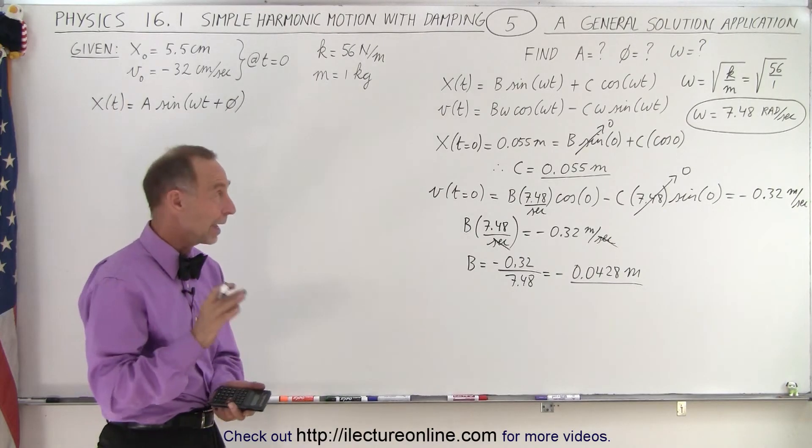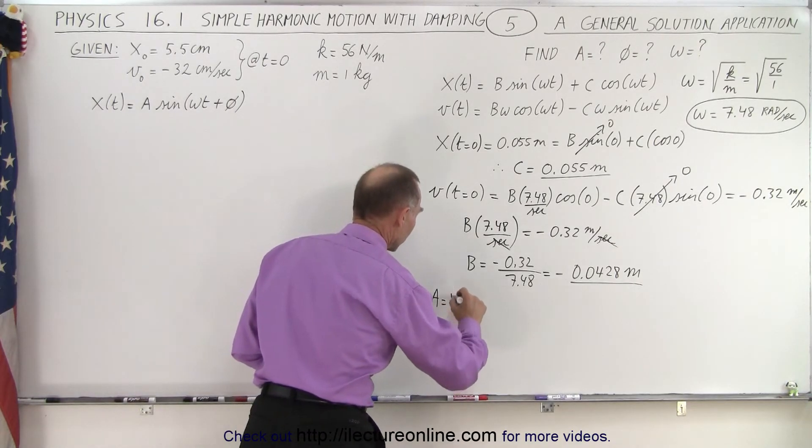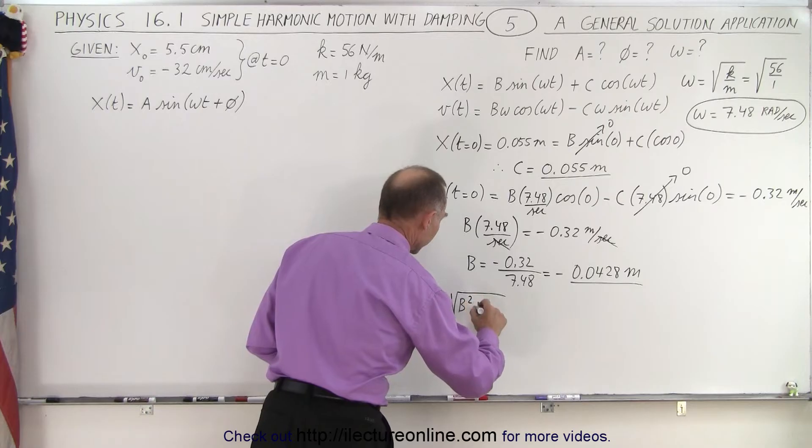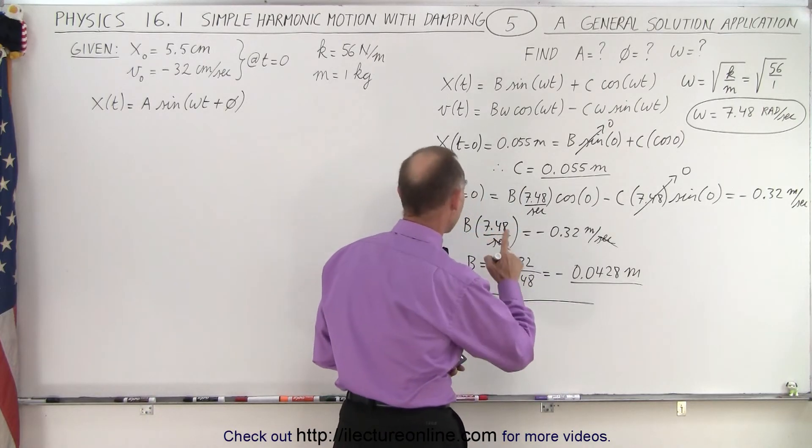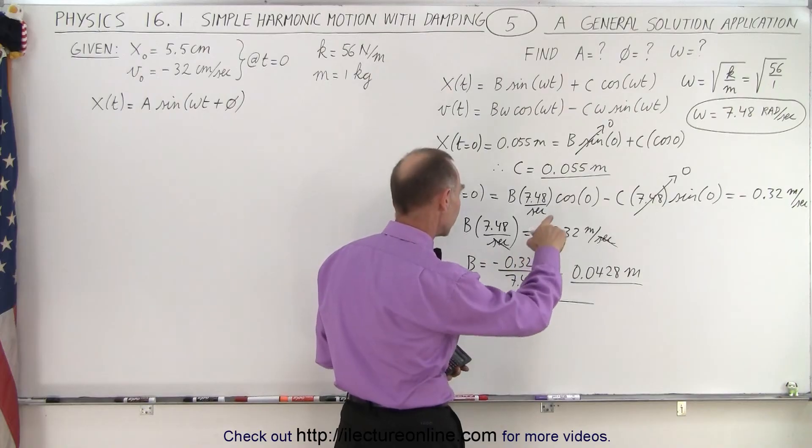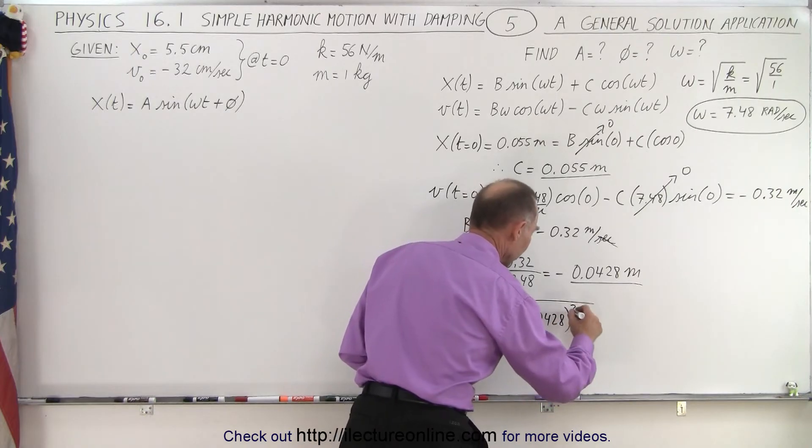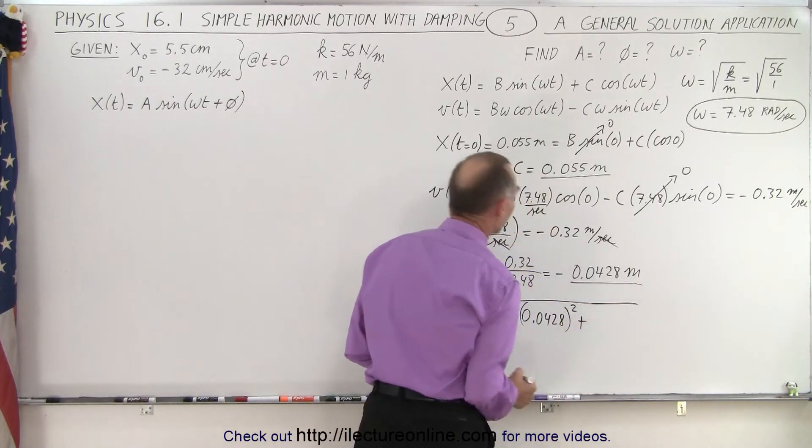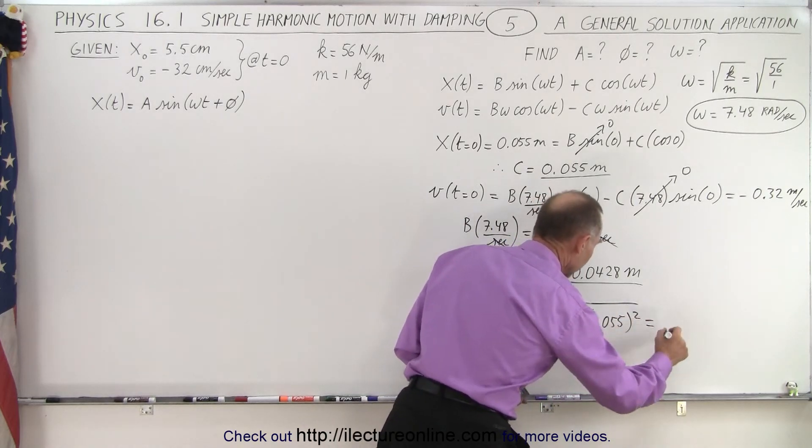Now, since we have both B and C, and we know that A is equal to the square root of B squared plus C squared, that is therefore equal to the square root of 0.0428 squared plus C, which is 0.055 quantity squared.